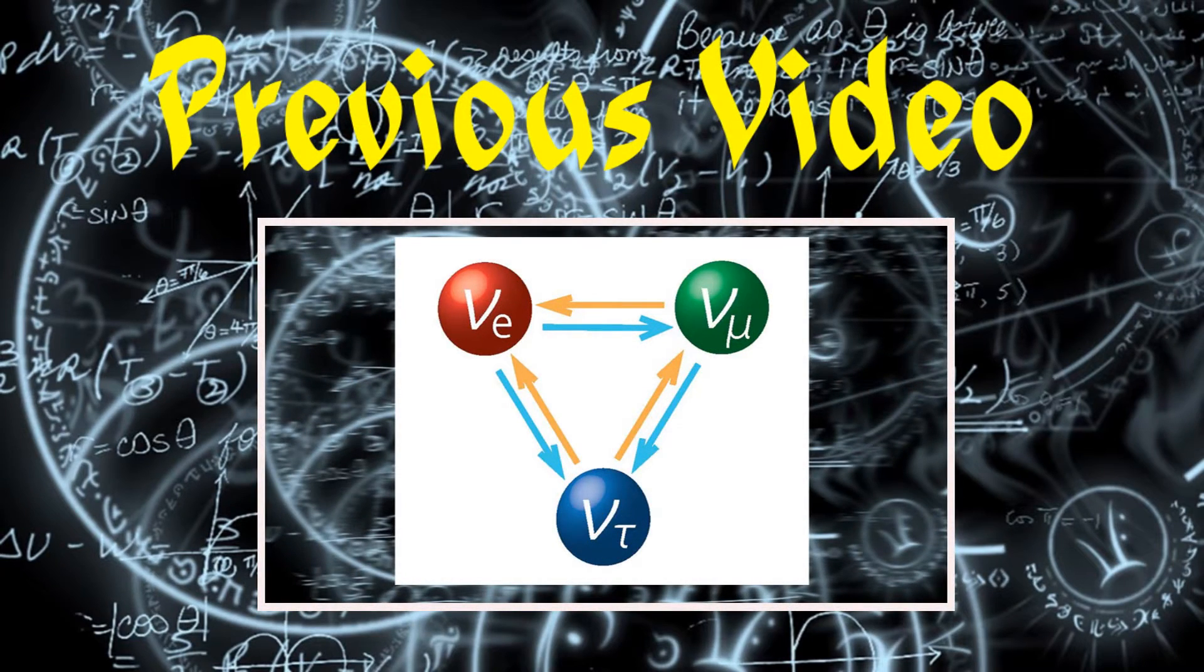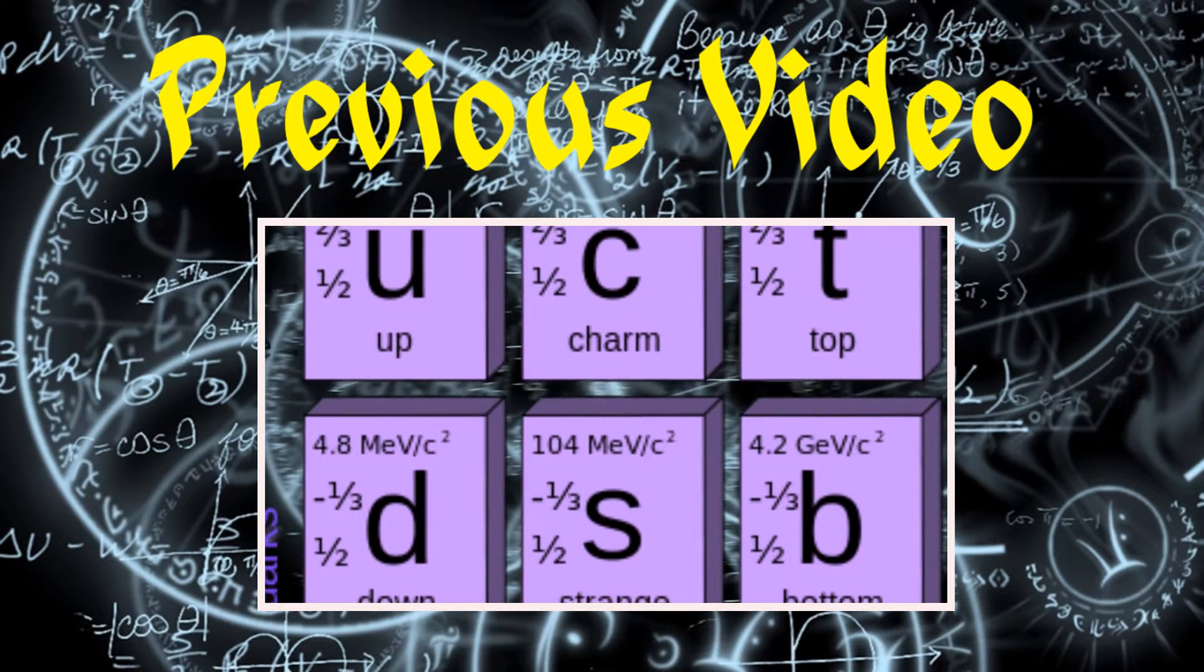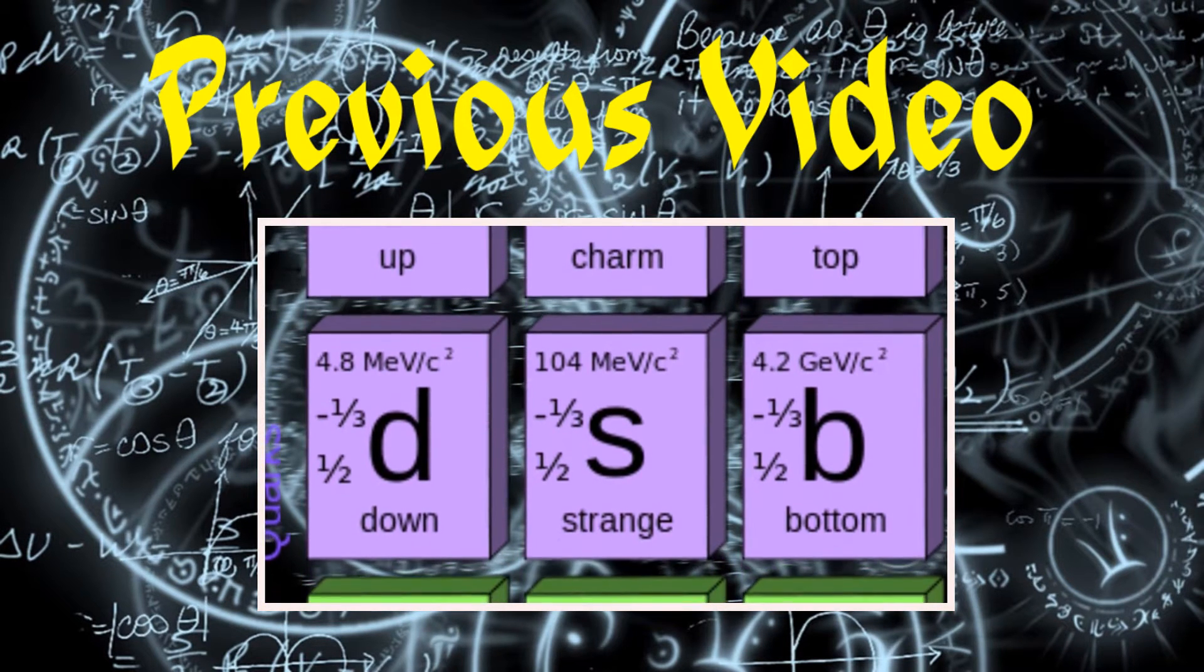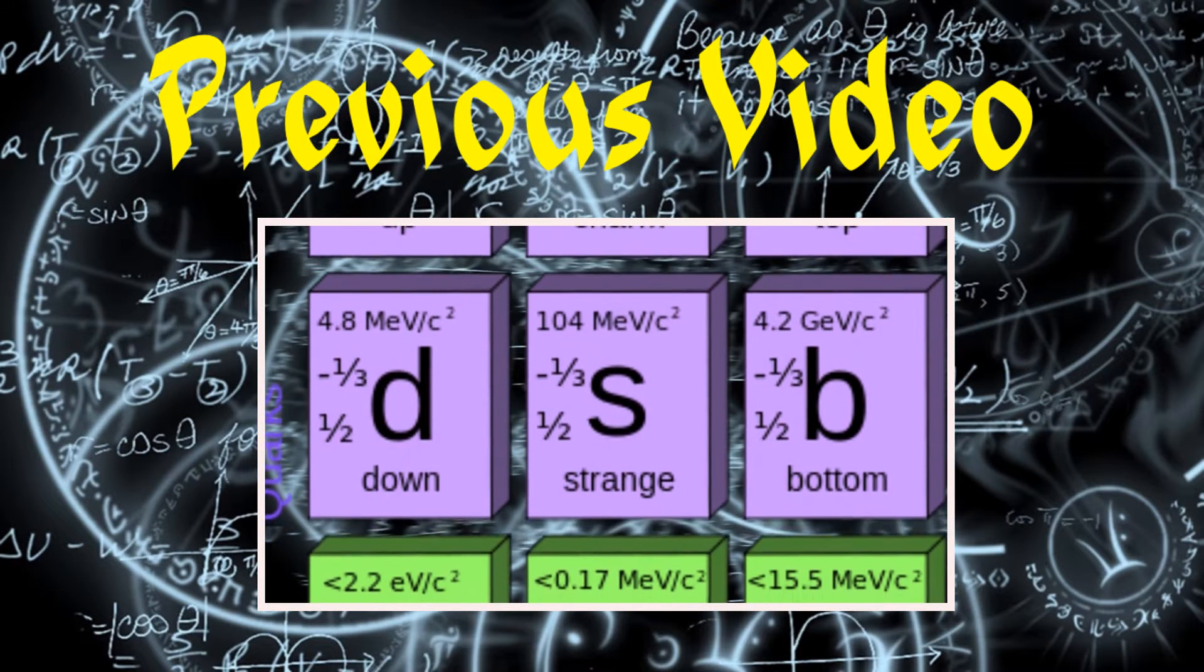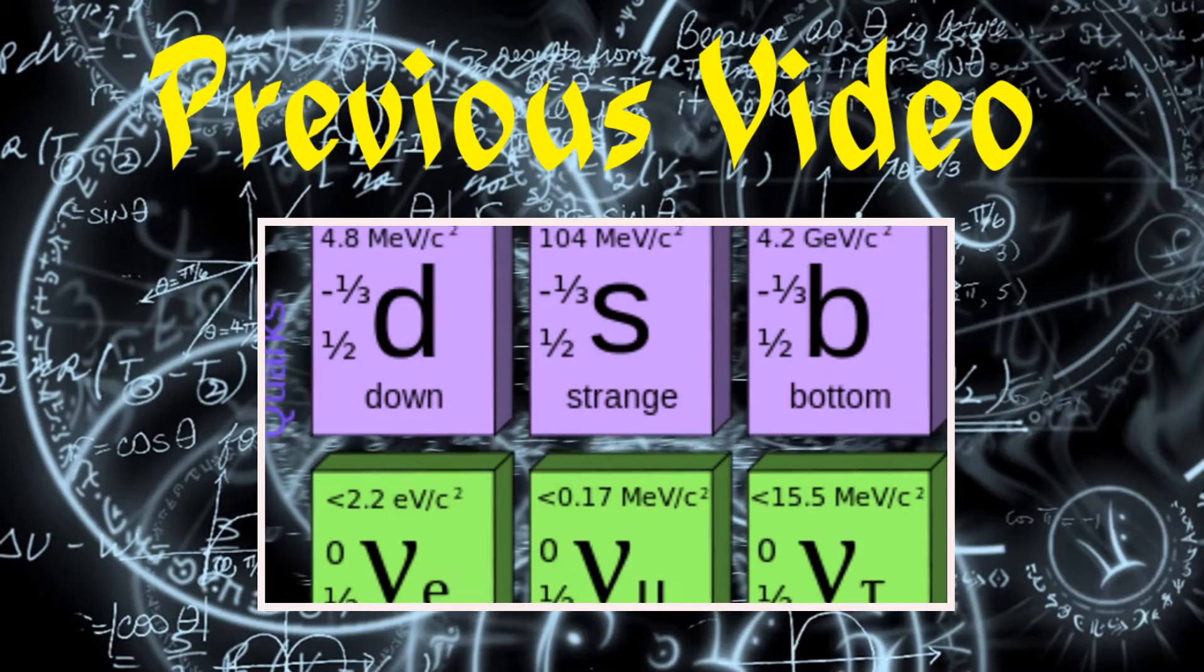In a previous video I made, I covered the basis for understanding neutrinos and the recent discoveries regarding their oscillating mass. If you haven't seen that video, make sure to click on the annotation on the screen, or click the link in the description. Now, onto the implications of this discovery.